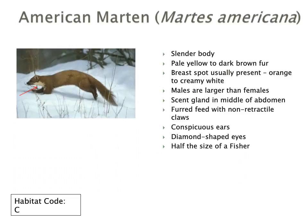The American marten has a slender body with relatively dark or pale yellow to brown fur. One of the unique identifying features is its breast spot — an orange to creamy white spot right underneath its chin at the beginning of its chest, indicated by the red arrow. Males are larger than females. It has very conspicuous ears and diamond-shaped eyes, is only about half the size of a fisher, and also has a bushy tail.